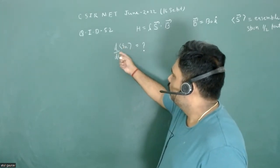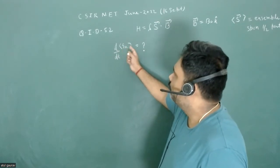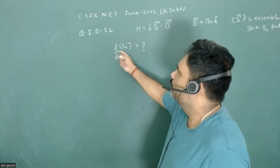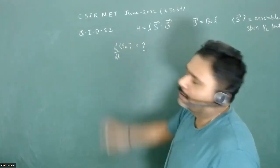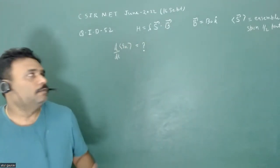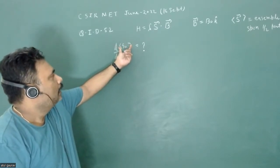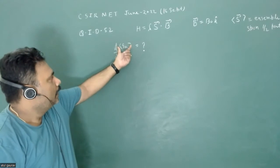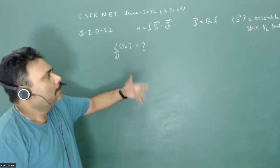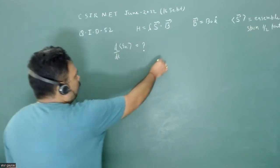What we have to do is calculate the value of expectation value of sx with respect to time. So what will be d upon dt expectation value of sx. Obviously, if you want to see how your expectation value of any operator is evolving with time, then we can use the Ehrenfest theorem. So what is this particular Ehrenfest theorem?